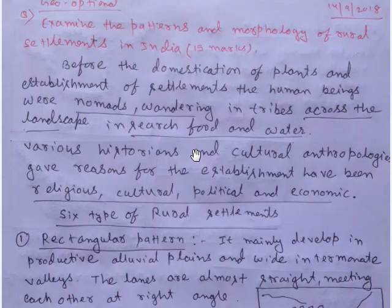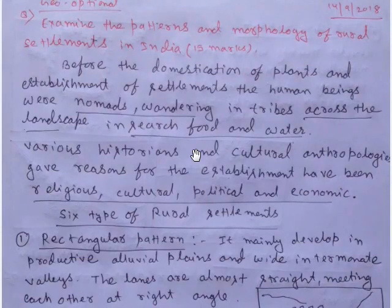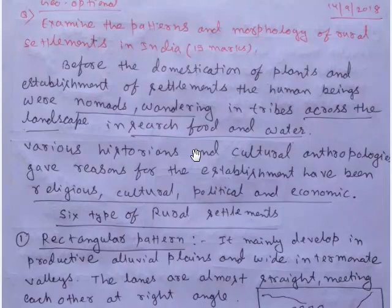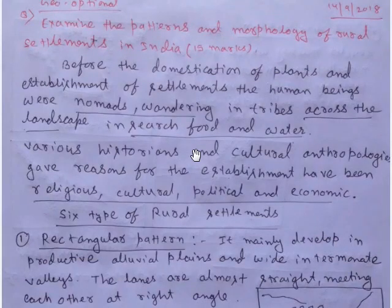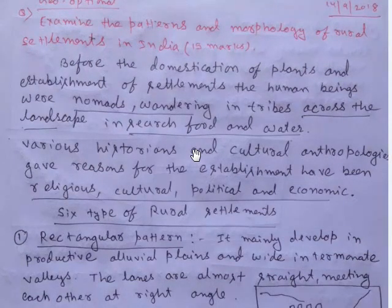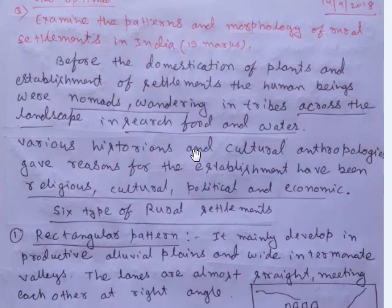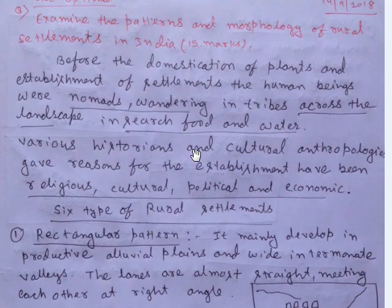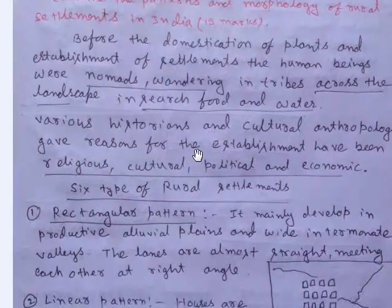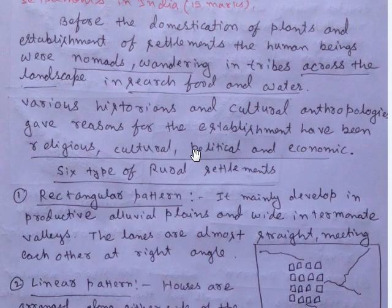First question: examine the potential patterns and morphology of rural settlements in India. Before the domestication of plants and establishment of settlements, human beings were nomads, wandering in tribes across the landscapes in search of food and water. Various historians and anthropologists gave reasons for the establishment of settlements.